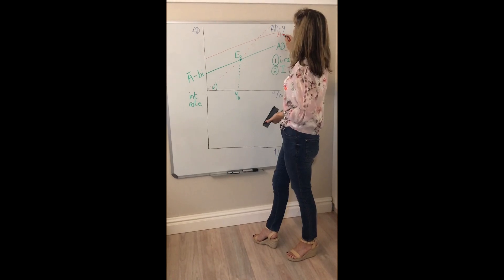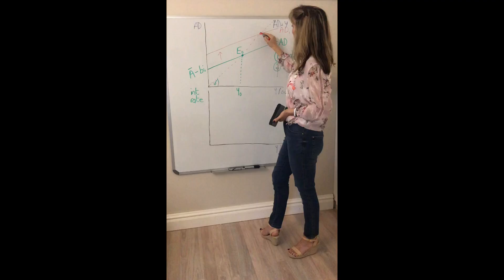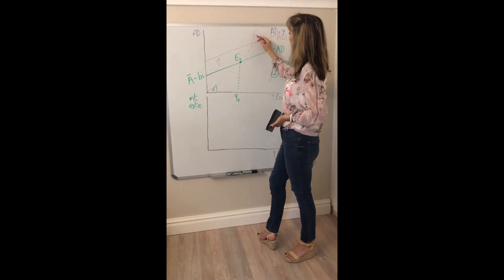So as the interest rate falls, planned investment rises and that causes our whole aggregate demand curve to shift upward. There it is. Let's call it AD1. The whole curve shifts upwards and we get a new equilibrium point where that intersects the 45 degree line and we'll call that E1.